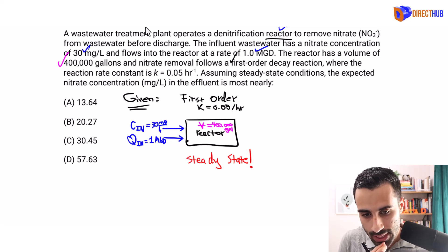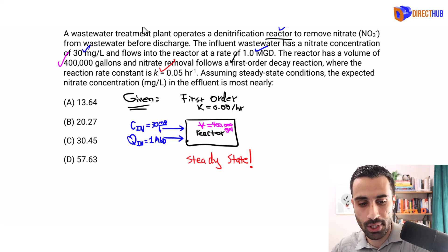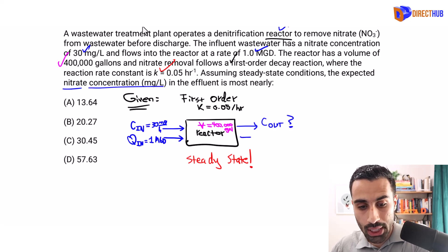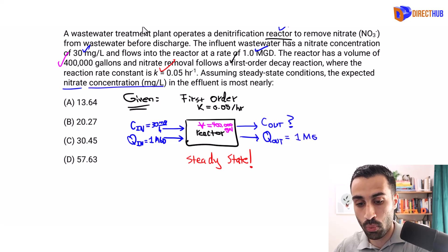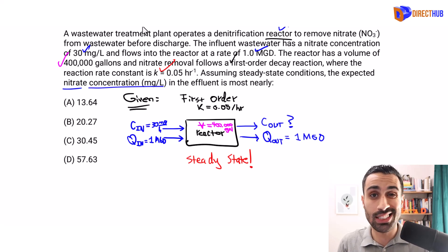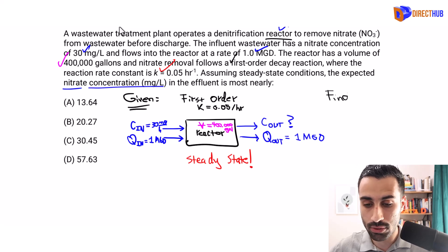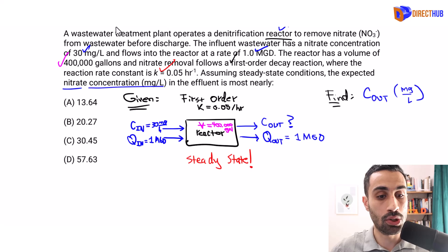The expected nitrate concentration in the effluent is what we need to find — that's C_out, the concentration leaving the reactor, in mg/L. Q_out equals 1 MGD, the same as Q_in under steady state. Keep that in the back of your head: C_out in mg/L is our goal. Let's go into the solution.